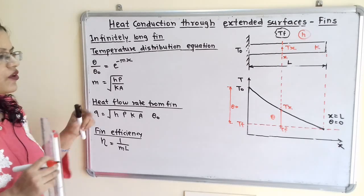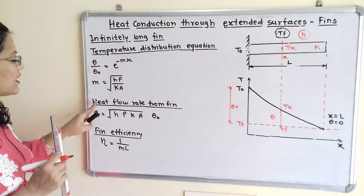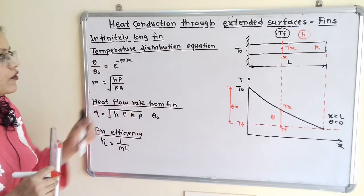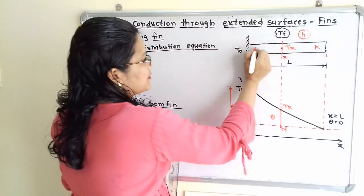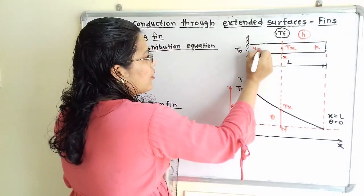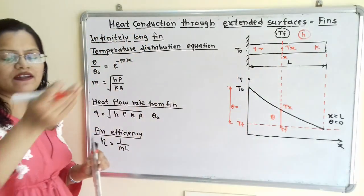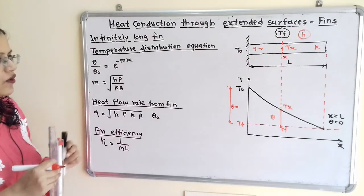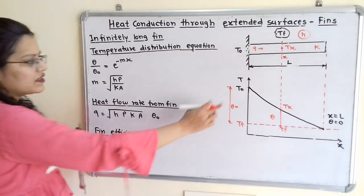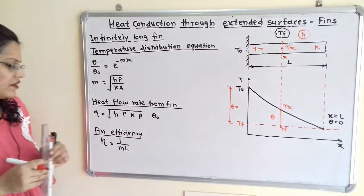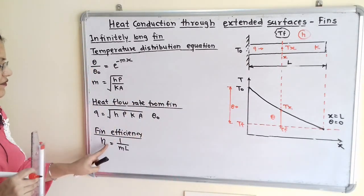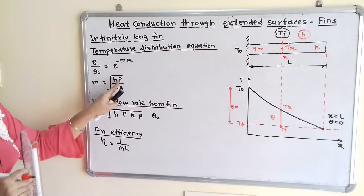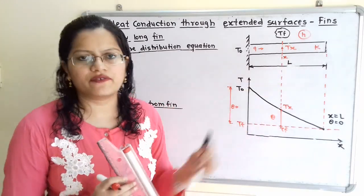Next, the heat flow rate from the fin is: Q = sqrt(HPKa) × theta_O, where theta_O = T_O minus T_F. Then fin efficiency eta = 1 / (M × L), where M = sqrt(HP / KA) and L is the length of the fin.